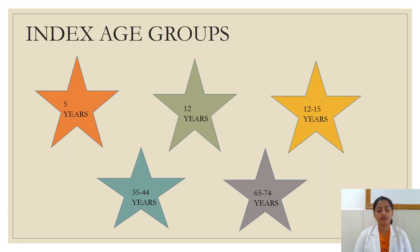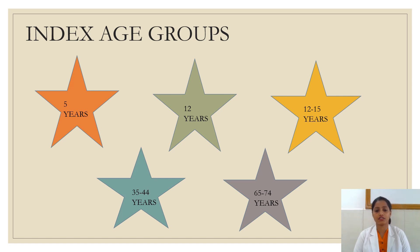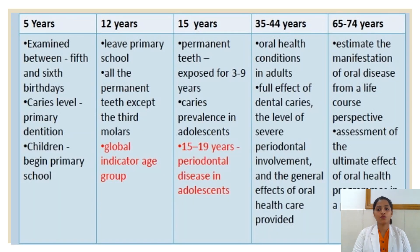There are five index age groups considered when starting a study or survey, arrived at based on previous surveys and the National Pathfinder survey. These index age groups include 5 years, 12 years, 12 to 15 years, 35 to 44 years, and finally 65 to 74 years for the elderly population. These are all the index age groups which are very important.